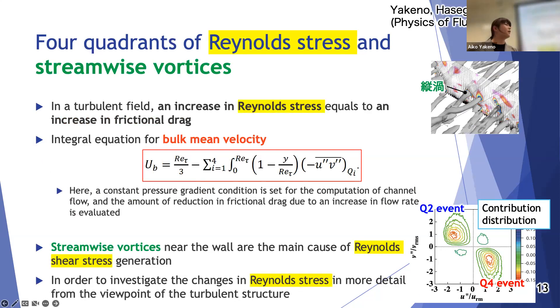Then we investigate the drag reduction over the wall oscillation in a turbulent field. An increase in Reynolds shear stress equals to the increase of frictional drag. Here I show the integral equation for bulk mean velocity. When we consider the pressure gradient is constant in the turbulent channel, we obtain the drag reduction effect as the velocity increase.